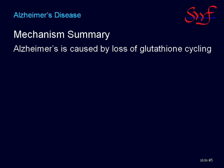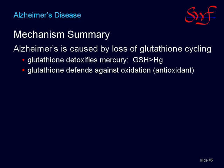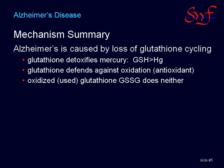Alzheimer's disease is caused by a loss of glutathione cycling. One of glutathione's roles is to detoxify mercury. If glutathione is always greater than the mercury burden, then the toxicity of mercury is kept low. Glutathione is also an antioxidant, which defends the cells against free radicals and oxidation. Oxidized glutathione does neither.